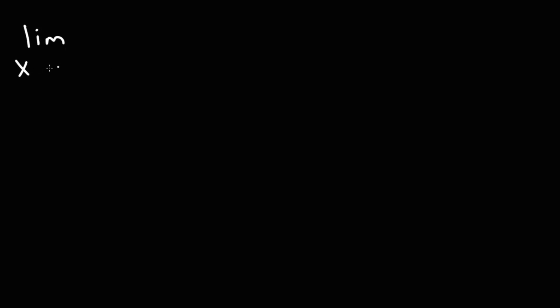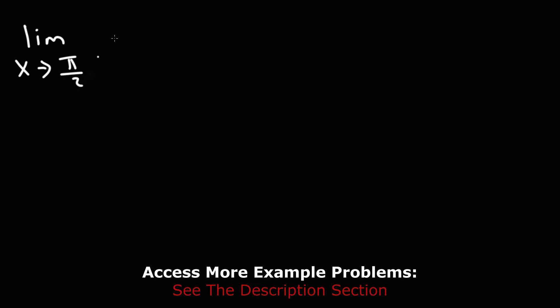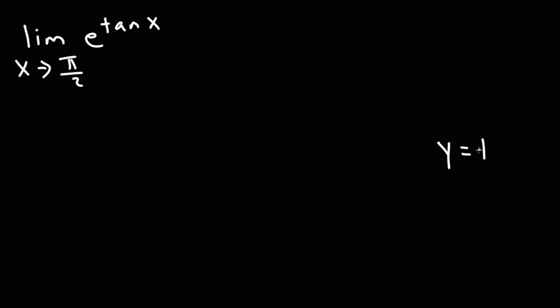Now let's work on another example. What is the limit as x approaches pi over 2 of the composite function e raised to the tangent x? For this problem, I'm going to make y equal to tangent x. Notice that this is not from the right or from the left side, and for tangent it matters, because tangent of 90 degrees is undefined, and the left side and the right side have different values.